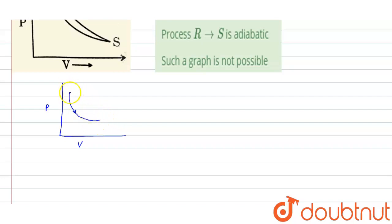If you want to draw the adiabatic curve, the upper curve will be your isothermal and lower curve will be your adiabatic. So this represents the isothermal process, and this represents the adiabatic process.